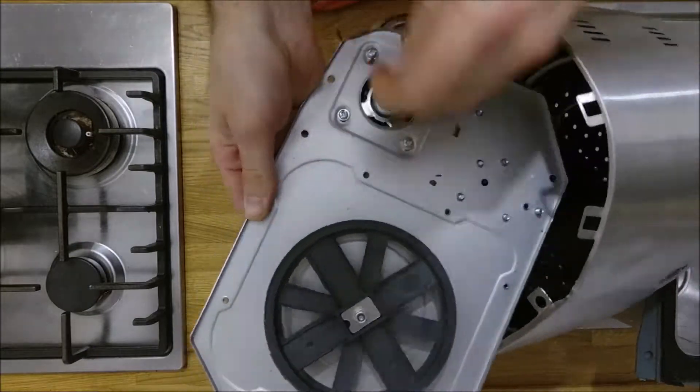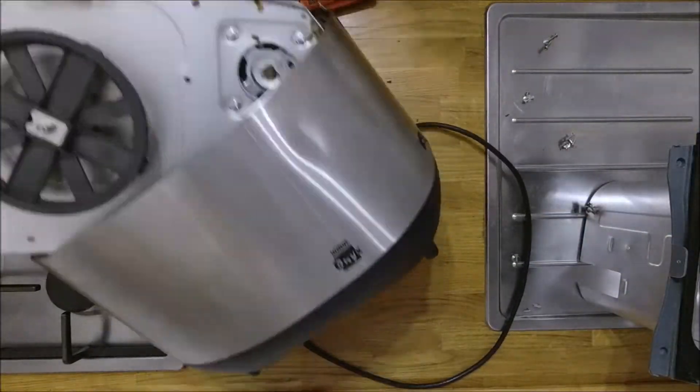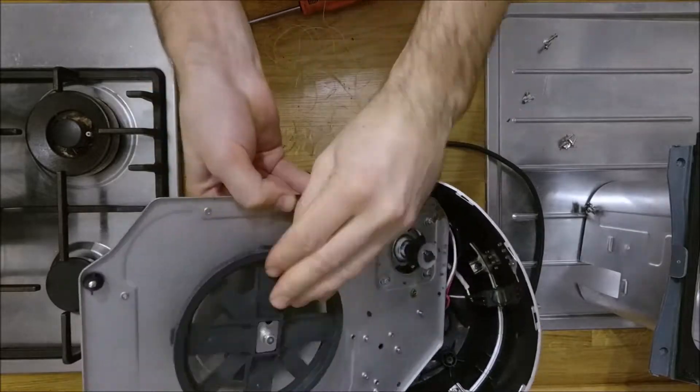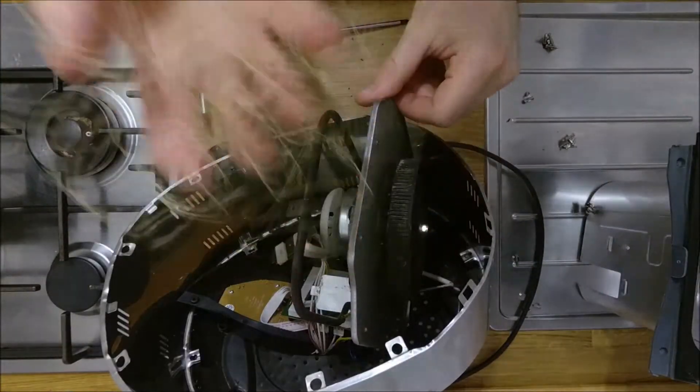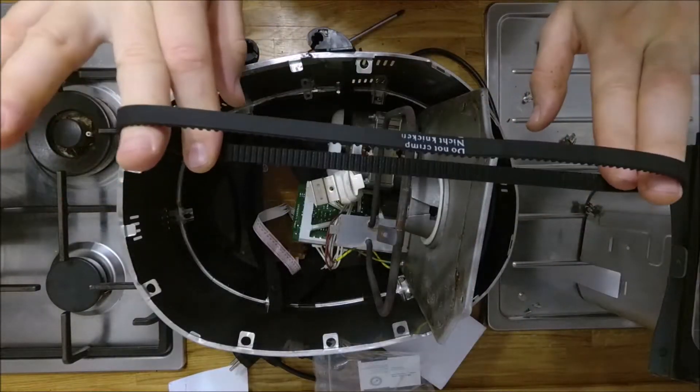As you can see, this belt was completely shredded. It had left little bits of teeth stuck in the grooves, so I wanted to clear all that out. Be careful of the sheet metal because it has pretty sharp edges. Here's the new belt.